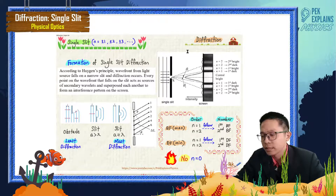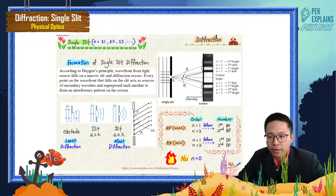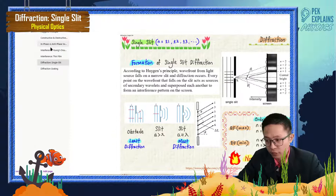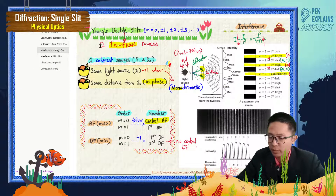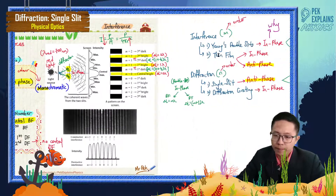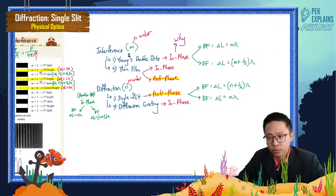Now let us learn about single slit. Single slit falls under the category of diffraction. Previously, we have learned about interference. Interference has two types: double slits and thin film.